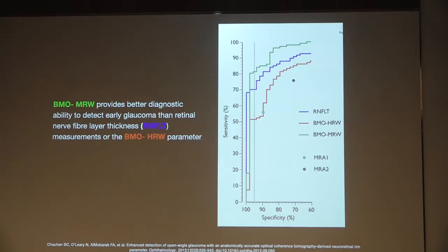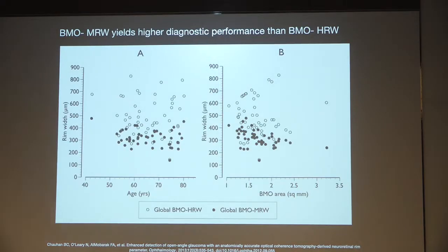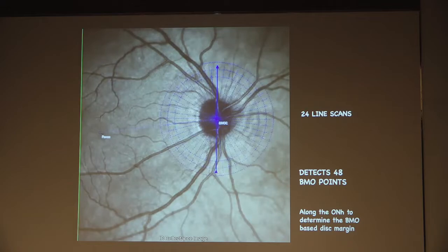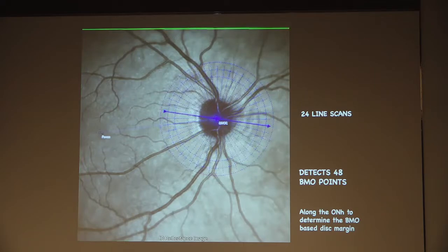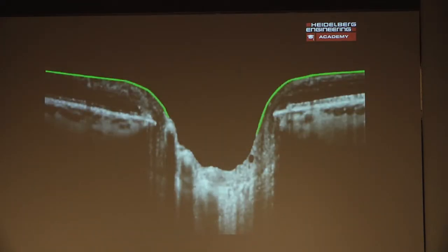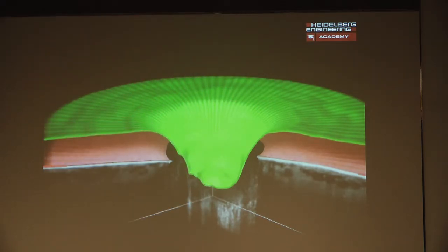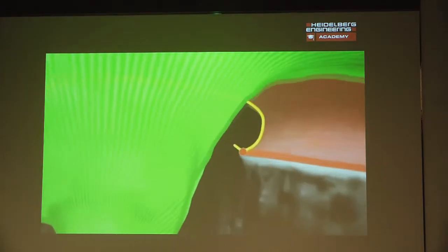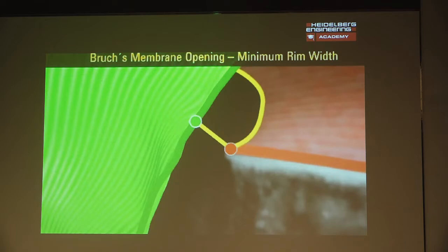The study by Chauhan et al. has shown that BMO MRW provides better diagnostic ability to detect early glaucoma than retinal nerve fiber layer thickness or the BMO HRW parameter, yielding higher diagnostic performance. In the Spectralis GMP program, there are 24 line scans which detect 48 BMO points throughout. The shortest distance from the Bruch's membrane opening to the internal limiting membrane is what we are interested in — that is the BMO MRW.